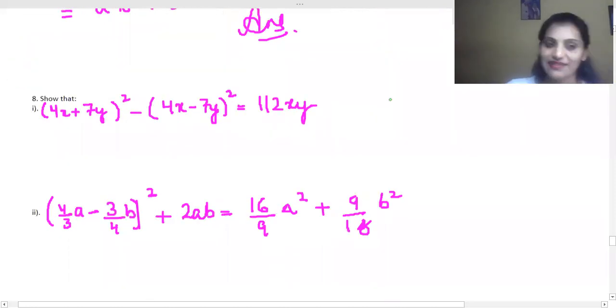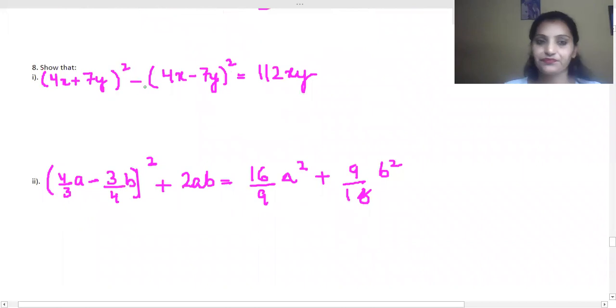Right? Now, let's go to question number 8. Now, what do we have to do? This is your LHS. Right? And this is RHS. So, you have to do equal proof. Okay?